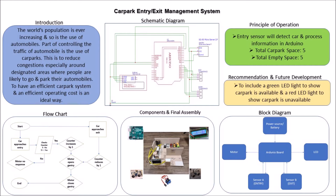We go to the recommendation and future development. One idea is to have a green LED light to show that the car park is available, so people from far can see there is availability. Another idea is to have a red LED light to show that the car park is unavailable, so a car approaching can tell from far whether the car park is full or there is still empty space, rather than going near to check the LCD screen.